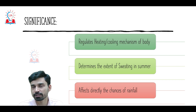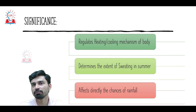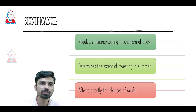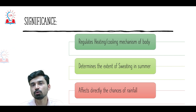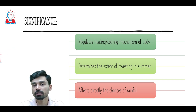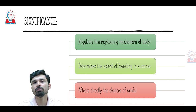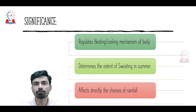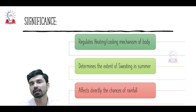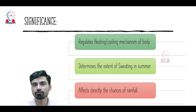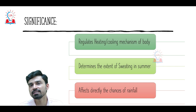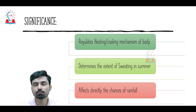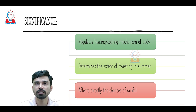RH determines the extent of sweating in summer. If RH is very high, you will profusely sweat without evaporation, while if RH is very low, your sweat will be able to cool your body easily. Third, RH is also one of the major factors determining the probability of rainfall over any area. Higher relative humidity generally means better chances of rainfall. If RH exceeds 100%, we have very high probability of rainfall because the air becomes supersaturated and cannot hold any more water vapor.